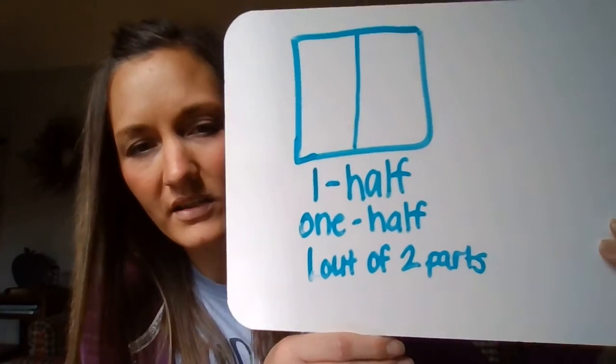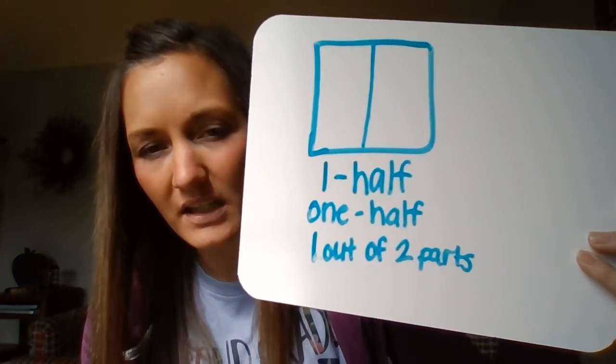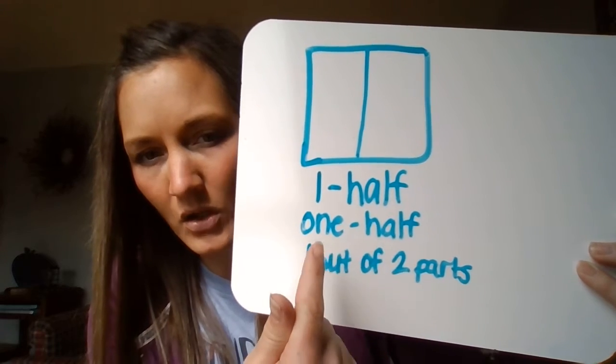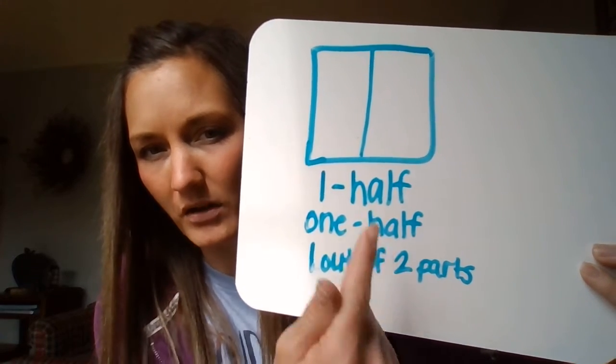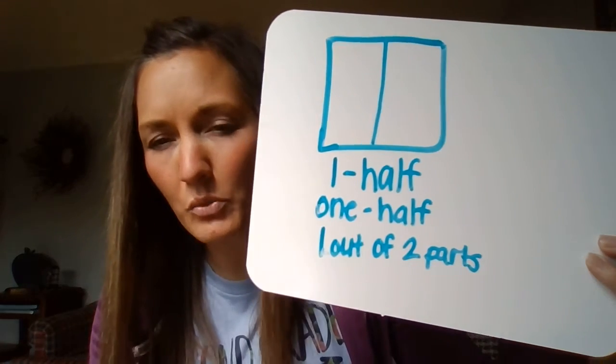Or I could say one out of two parts. So there are some ways to write what this shape says: one half, one half with words, or one out of two parts, because I have one, two — two parts.